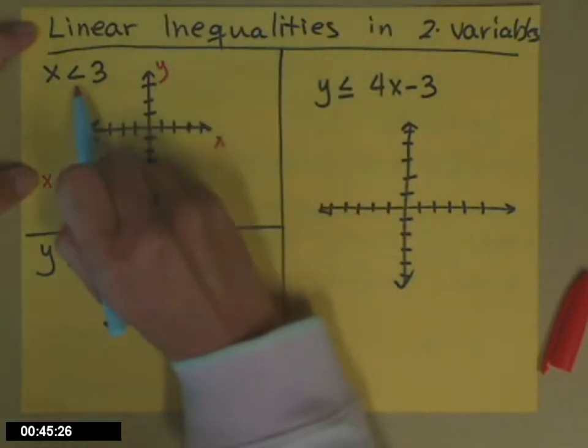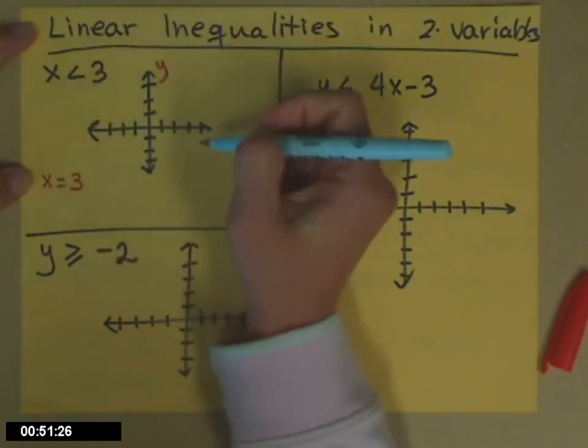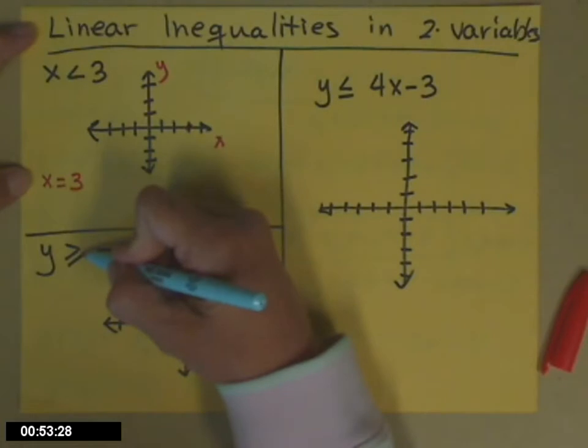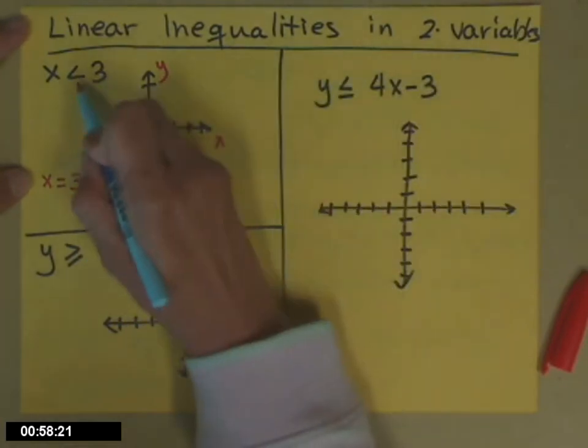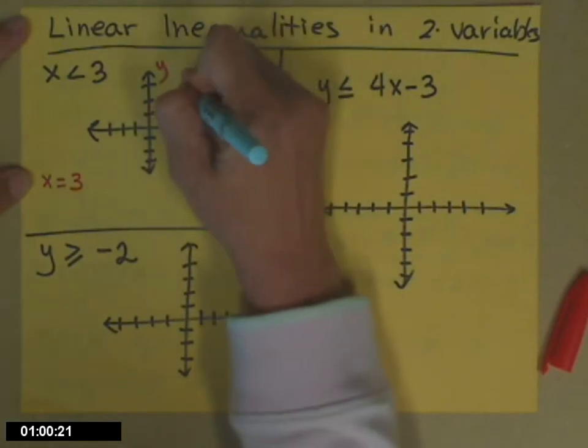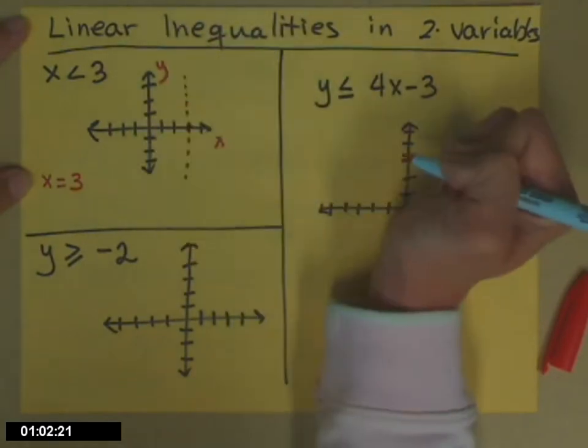But before I start graphing, I want to look at this symbol. Less than or greater than symbols get dotted lines, versus greater than or equal to or less than or equal to—those get solid lines. So this is a less than, so it's going to get a dotted line.